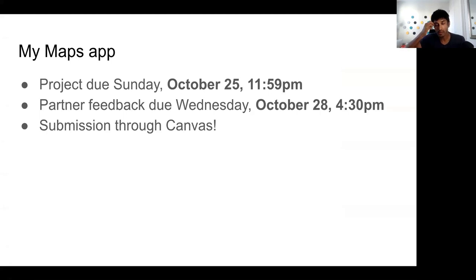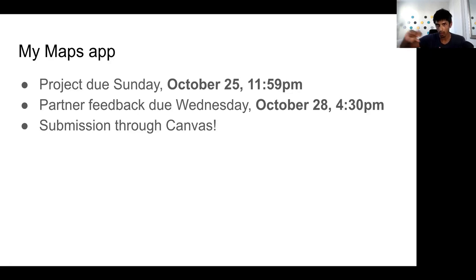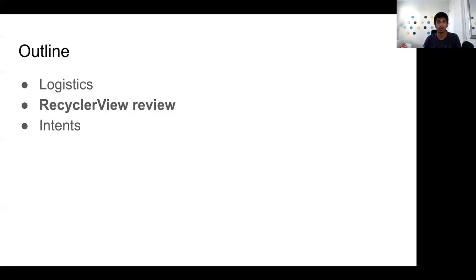This project is going to be a bit more time-consuming than Project One. The walkthrough video for Project One was about an hour long; for this project it's about an hour and a half. Budget the appropriate time. The My Maps project is due a week and a half from today, October 25th. Similar to the tip calculator project, between Sunday and Wednesday after it's due, you'll have the opportunity to give feedback to your partner. You take your GitHub link and submit that to Canvas.